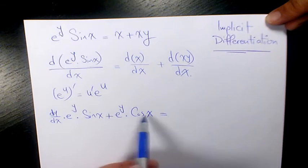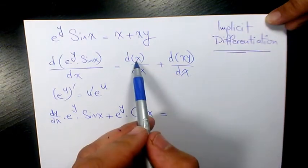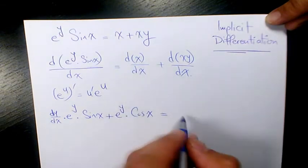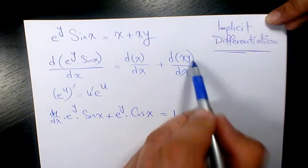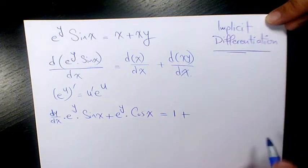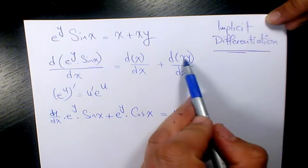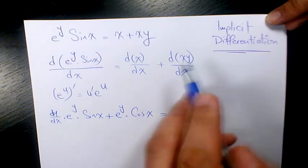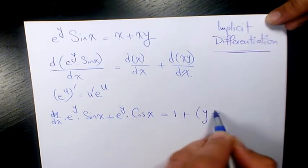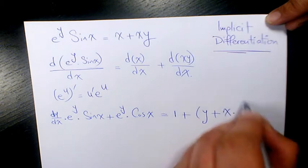That's how we use the product rule. The derivative of x with respect to x is 1. For the derivative of xy, we again use the product rule: derivative of x is 1, times y gives y, plus x times the derivative of y.